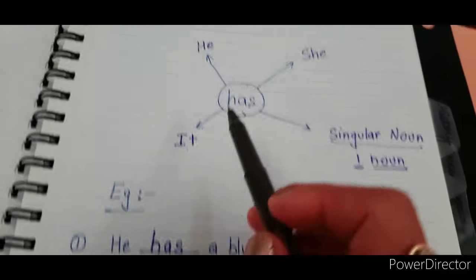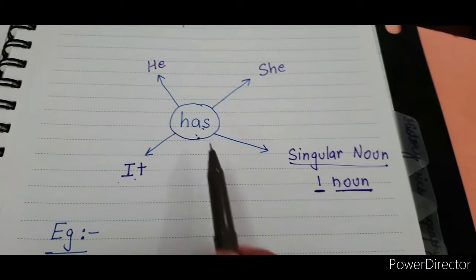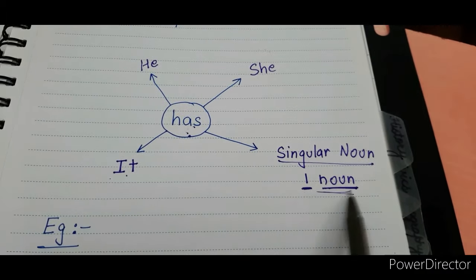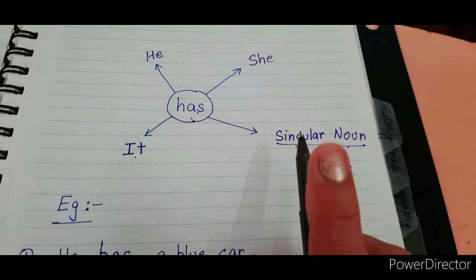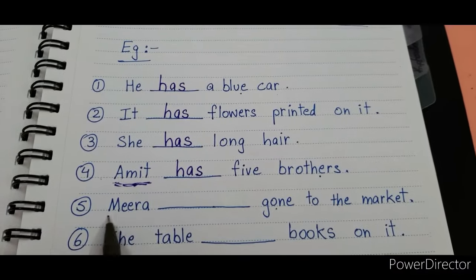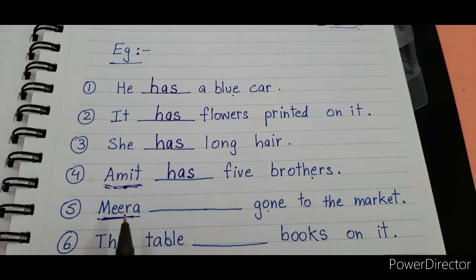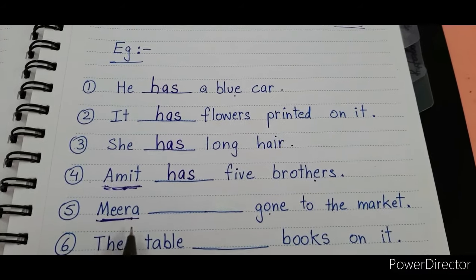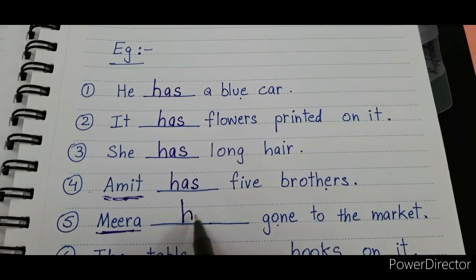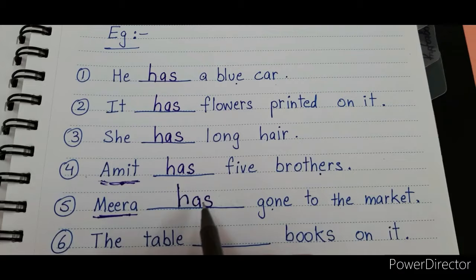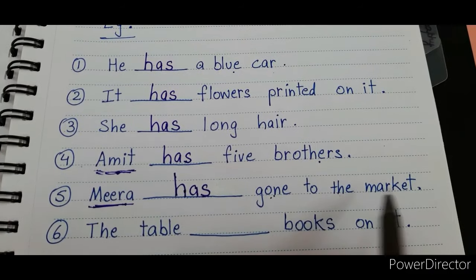Next: 'Meera ___ gone to the market.' Is 'Meera' in our pronoun list? No. But we use 'has' with a singular noun. Meera is the name of a girl — that is a noun — and there is only one Meera. So we use 'has': 'Meera has gone to the market.'